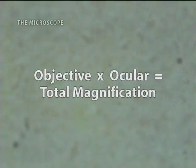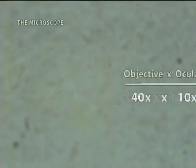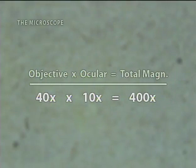For example, using the high-dry objective with a power of 40 times and an ocular with a power of 10, you would have a total magnification of 400 times.